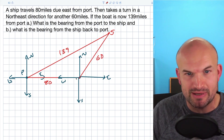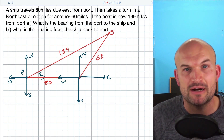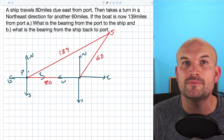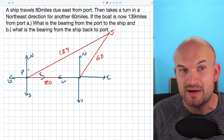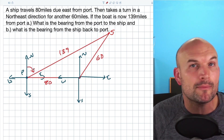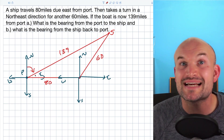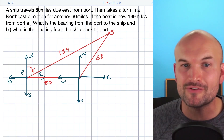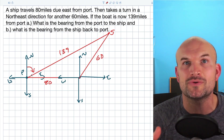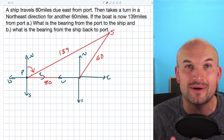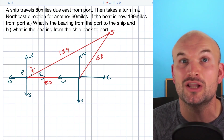Here's where the ship is currently and here's the port. It traveled 80 miles east, then turned northeast. When looking for the bearing, we're looking for the angle from due north. We have a problem because we can't directly solve for that angle outside the triangle. However, we have an oblique triangle with all three side lengths known. Therefore, we can solve for this triangle using the law of cosines.